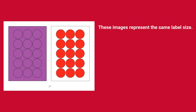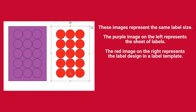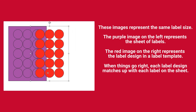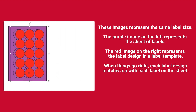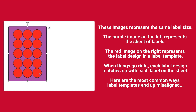These images represent the same label size. The purple image on the left represents the sheet of labels. The red image on the right represents the label design in a label template. When things go right, each label design matches up with each label on the sheet. Here are the most common ways label templates end up misaligned.